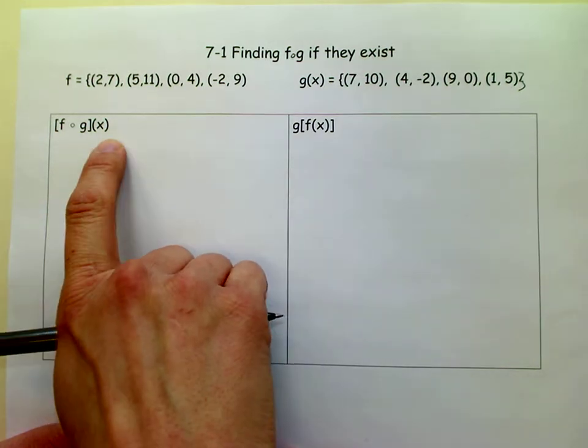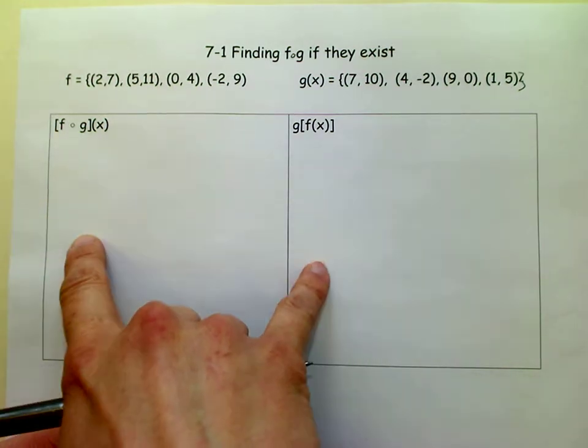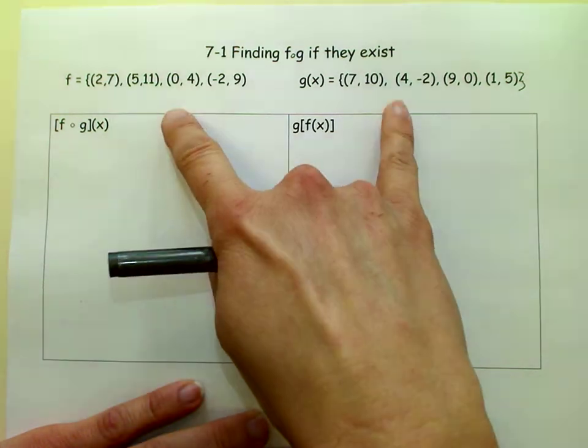So we're going to find f of g of x if it exists, because sometimes it doesn't exist when you have two sets of ordered pairs.